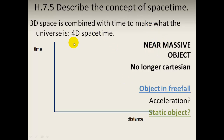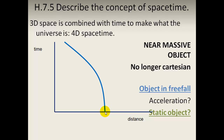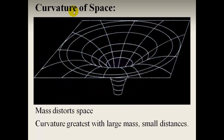Now let's describe space-time near a massive object. It's no longer Cartesian — we don't have imaginary lines that are parallel and at 90 degrees. An object in freefall curls over because the lines of space-time are actually curved, and the object is taking the shortest route — even though the space-time is distorted so you can't see that it is the shortest route. A static object is not following the shortest route because a force is stopping it from moving freely.